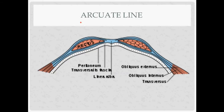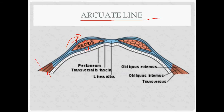This is the arcuate line — a good thing to know. In this picture, we're above the arcuate line because we have both an anterior and a posterior rectus sheath. The aponeuroses of the three lateral muscle layers contribute: the external oblique and half of the internal oblique form the anterior part, while the transversalis and the other half of the internal oblique form the posterior rectus sheath. Underneath the aponeuroses you can see the transversalis fascia, with the peritoneum as the innermost layer.